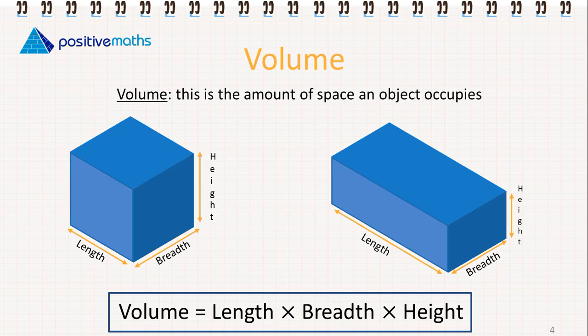So we'll go through the volume of a cube and rectangular solid. They both have three dimensions: length, breadth and height, or length, width and height.